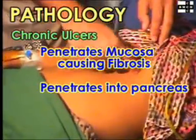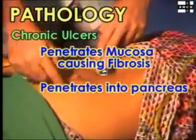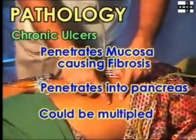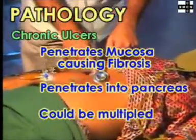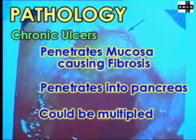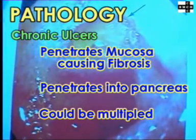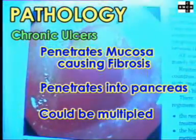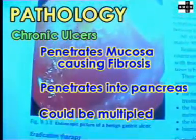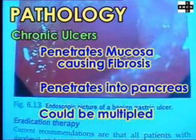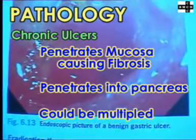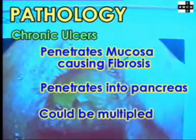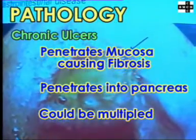Posterior ulcers could penetrate into the pancreas. Sometimes there may be more than one ulcer, both anteriorly and posteriorly, and these are referred to as kissing ulcers. Sometimes the ulceration may be extensive with no mucosa remaining. Malignancy in this area is so uncommon that surgeons can confidently treat these as ulcers.